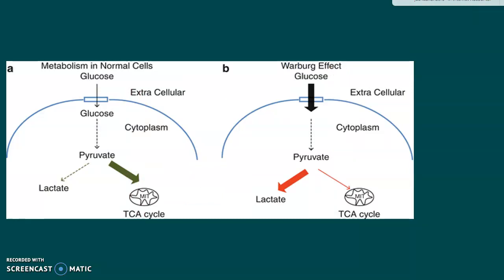One interesting thing is that when a cell becomes cancerous, it often undergoes the Warburg effect. Typically our cells use oxygen and get that big payoff of 32 to 36 ATP through oxidative phosphorylation. But when a cell becomes tumorigenic — cancerous — it shifts its metabolism away from aerobic respiration using oxygen and toward anaerobic respiration using lactate, getting only two ATP net, as you may remember from glycolysis.